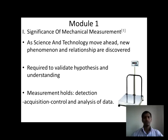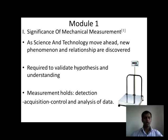We can say that we are considering something which is right or wrong. If it is right, the hypothesis is right; if it is wrong, the hypothesis is wrong. Mechanical measurement holds detection, acquisition, control, and analysis of data. Detection can be done with the help of a sensor. Acquisition can be done with the help of a data acquisition system. After getting data from the data acquisition system, we can control and analyze this data.